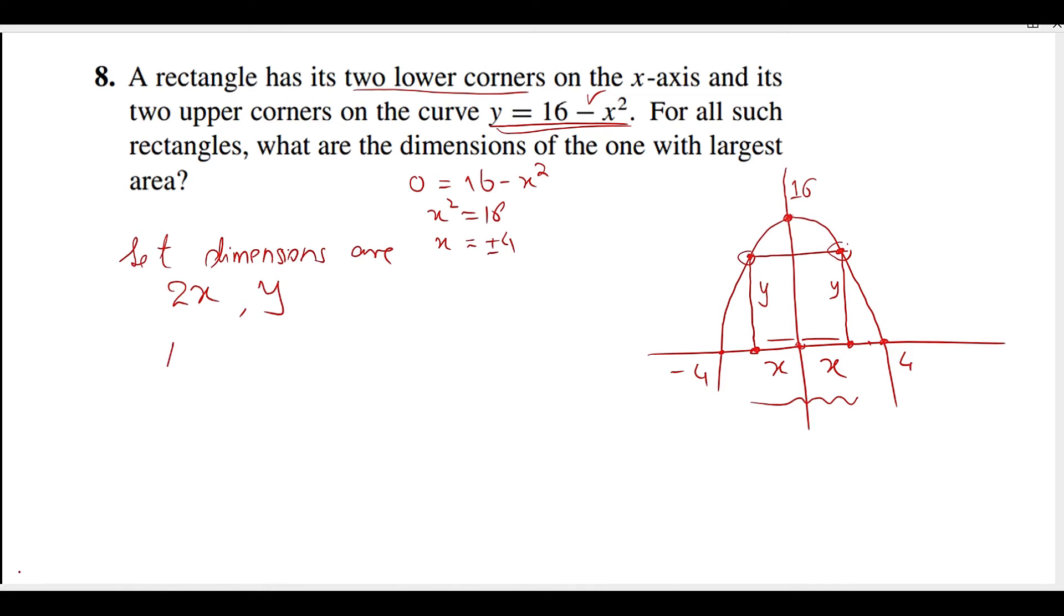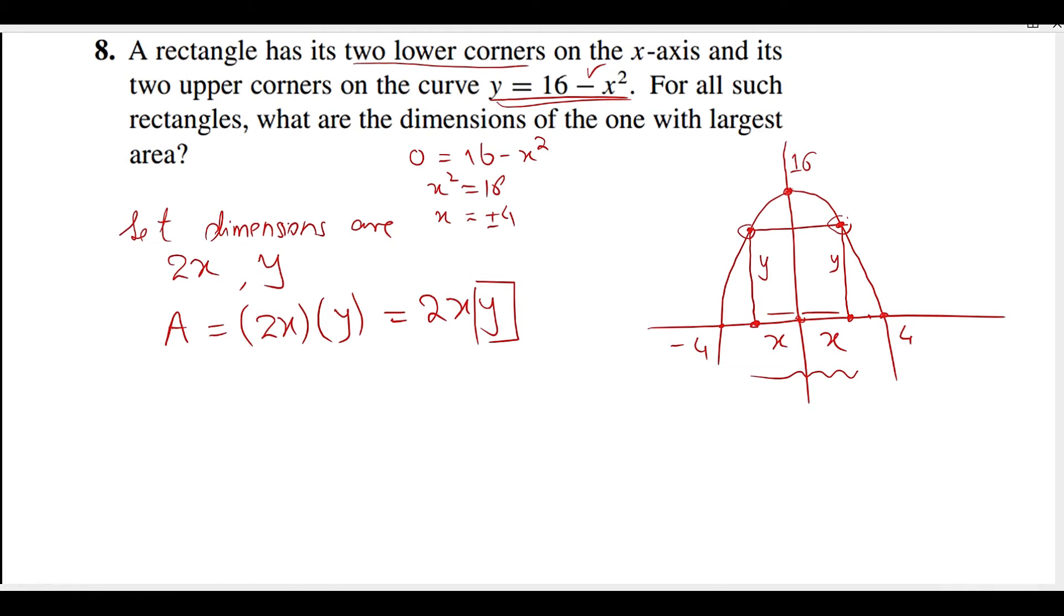We need the largest area. The area formula is length times width, so A = 2xy. We need to express this in terms of x only. Since y = 16 - x², we substitute: A = 2x(16 - x²) = 32x - 2x³. This is our area.